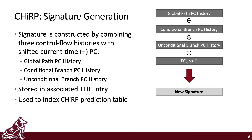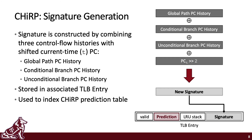CHIRP uses a specially designed history signature made by combining three control flow histories with a current-time PC. Making the signature a combination rather than keeping all histories as separate signatures reduces hardware storage and prediction times. We store PC value history, not outcome history. Specific order bits from branch and path PCs are stored and combined together to form the signature. More information on signature generation, including which bits are used, shifted, and combined, can be found in the paper. This signature is stored in its associated TLB entry and used to index the CHIRP prediction table.